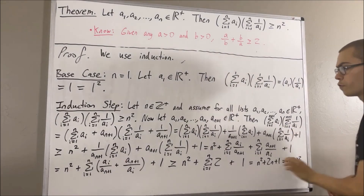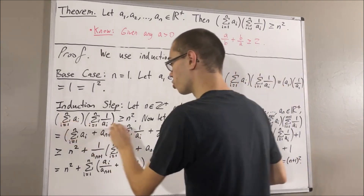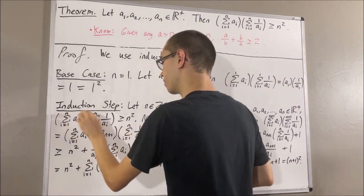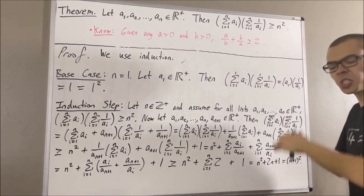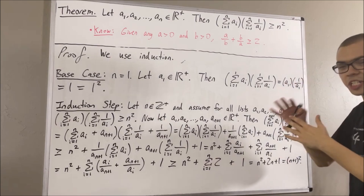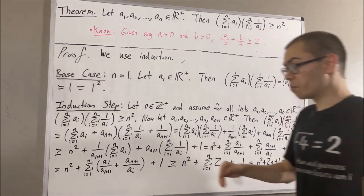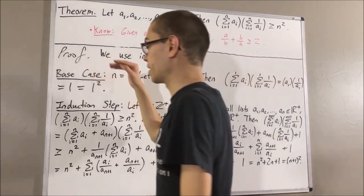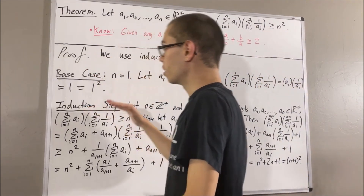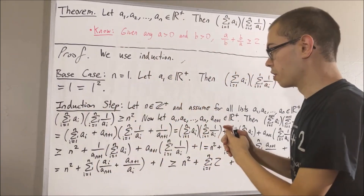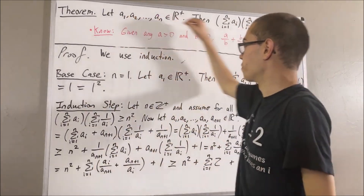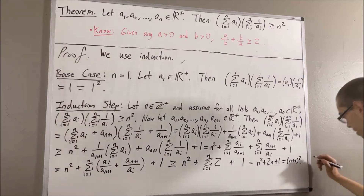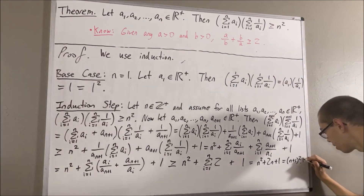Consequently, this sum should be greater than or equal to the sum from i equals 1 to n of 2, which is equal to 2n because we're adding 2 a total of n times. And that's just equal to n plus 1 squared. So, what we've shown here is that this guy is greater than or equal to n plus 1 squared. In other words, we have shown that this is true where n is replaced with n plus 1. So, this completes the induction step.